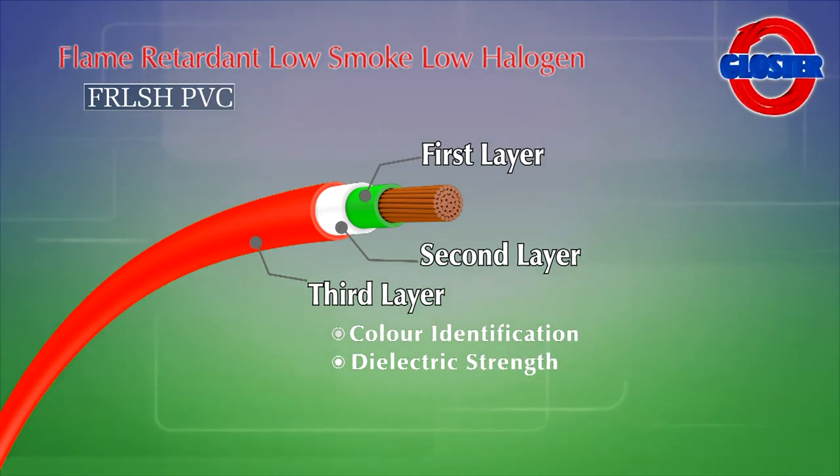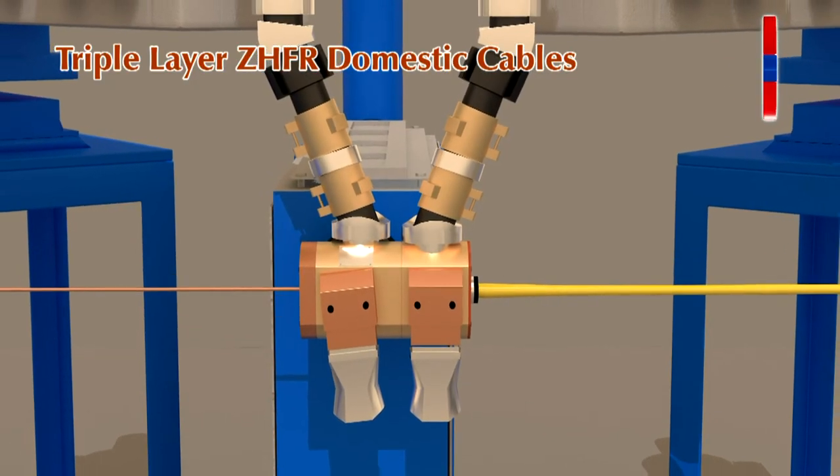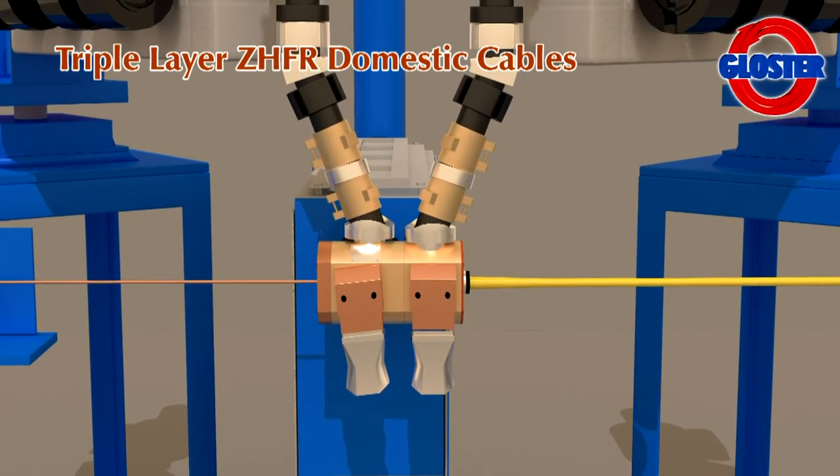Because of FRL-SH insulation, dielectric remains intact and strong. Gloucester also manufactures domestic cables with triple layer ZHFR PVC with the same technology.